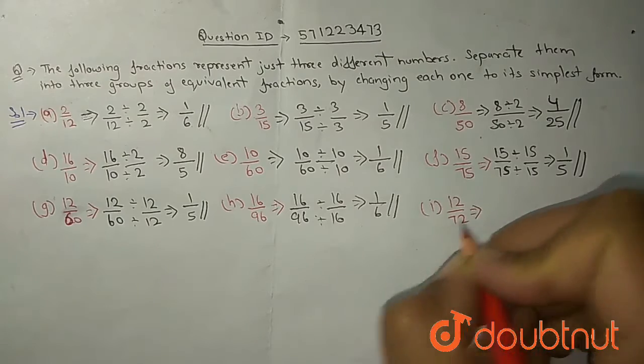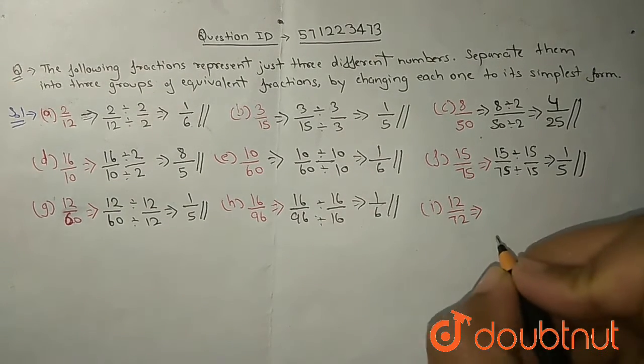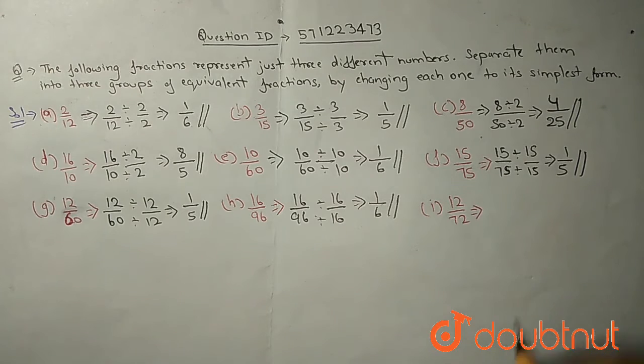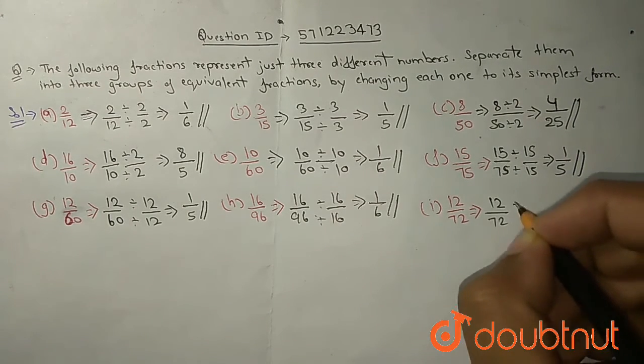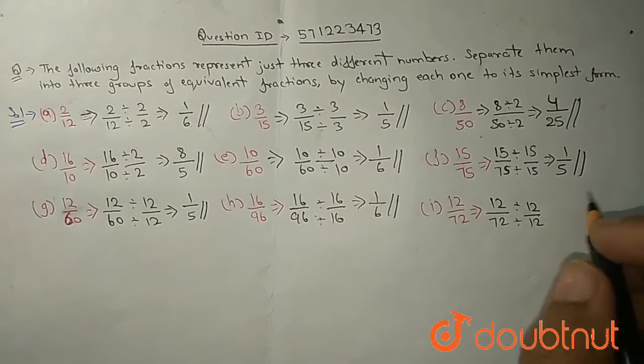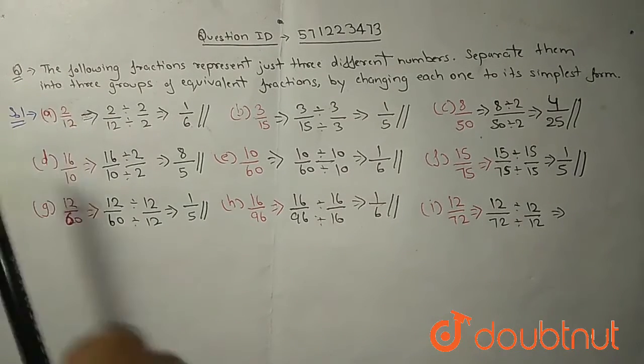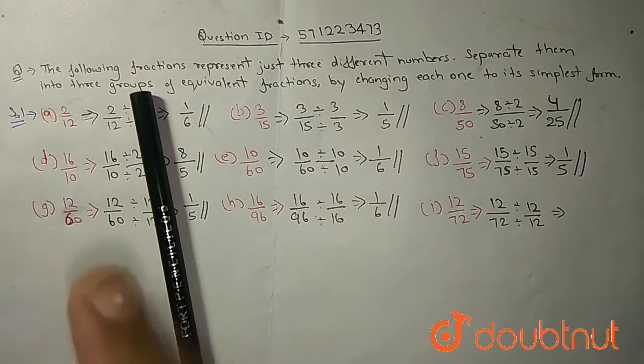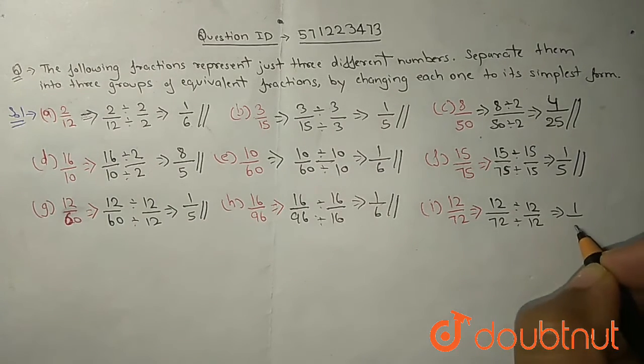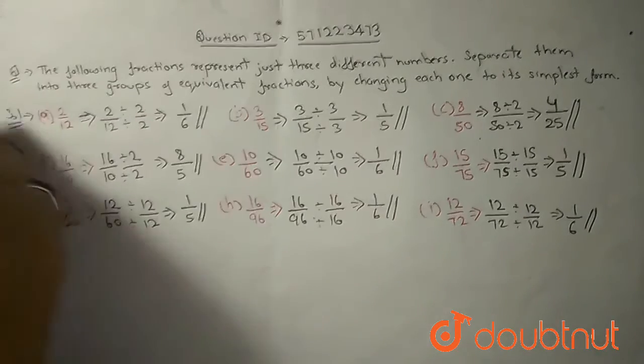Now moving towards I part. I is 12 upon 72. If you recall about 12 and 72, does 72 come in the 12 table? Yes obviously. How many times? Let's see, 12 divided by 12. We know that 12 comes at 1 time and 72 comes at 12 at 6 times. So we can write 1 upon 6.